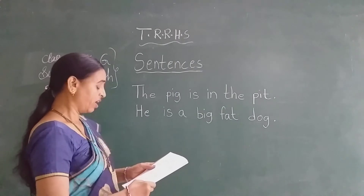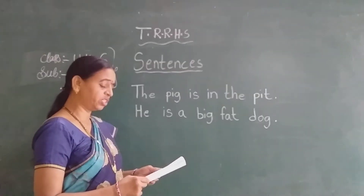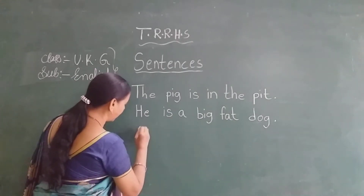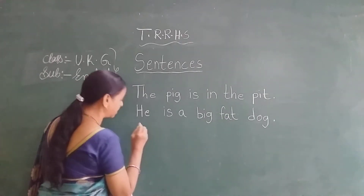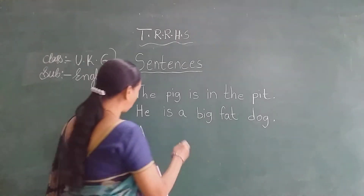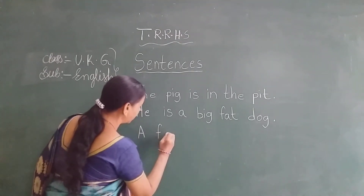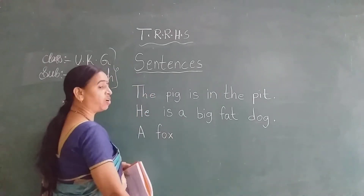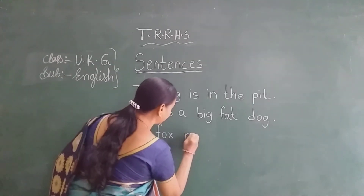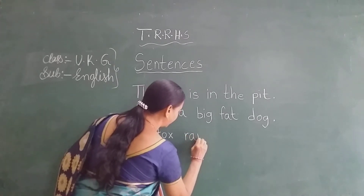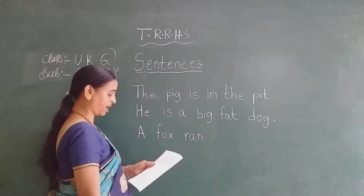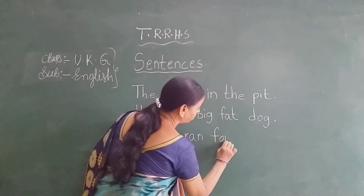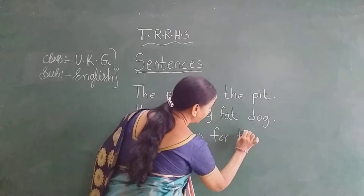Now next sentence: A fox ran for the cat. A fox ran for the cat. First letter is capital letter. A fox. Fox spelling: F-O-X. Fox. A fox ran. Ran spelling: R-A-N. Ran. A fox ran for the cat. For: F-O-R. The: T-H-E.